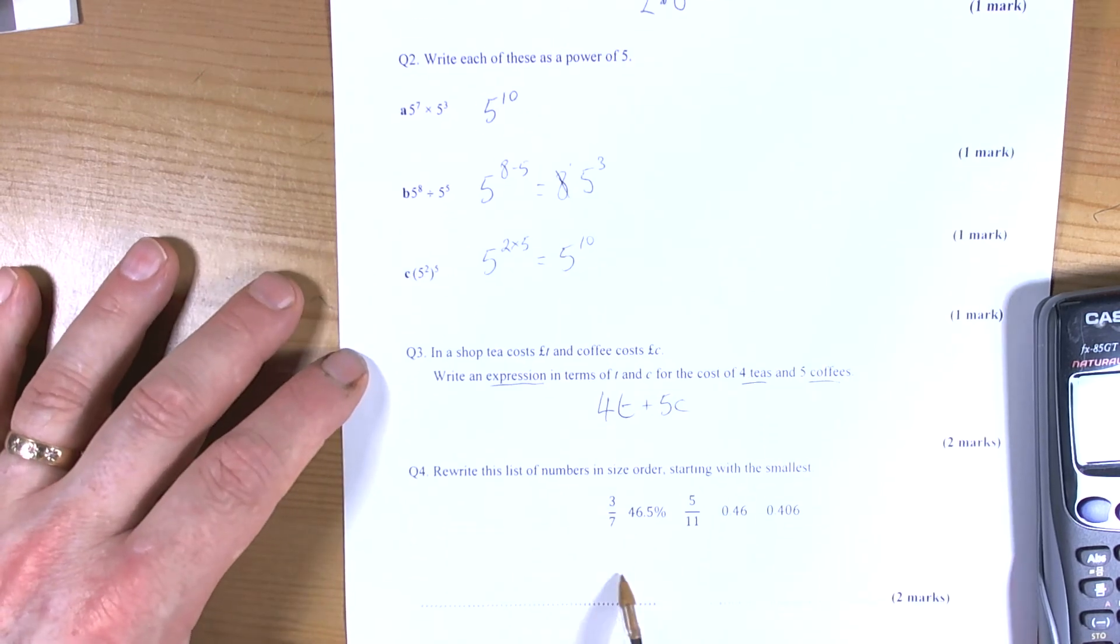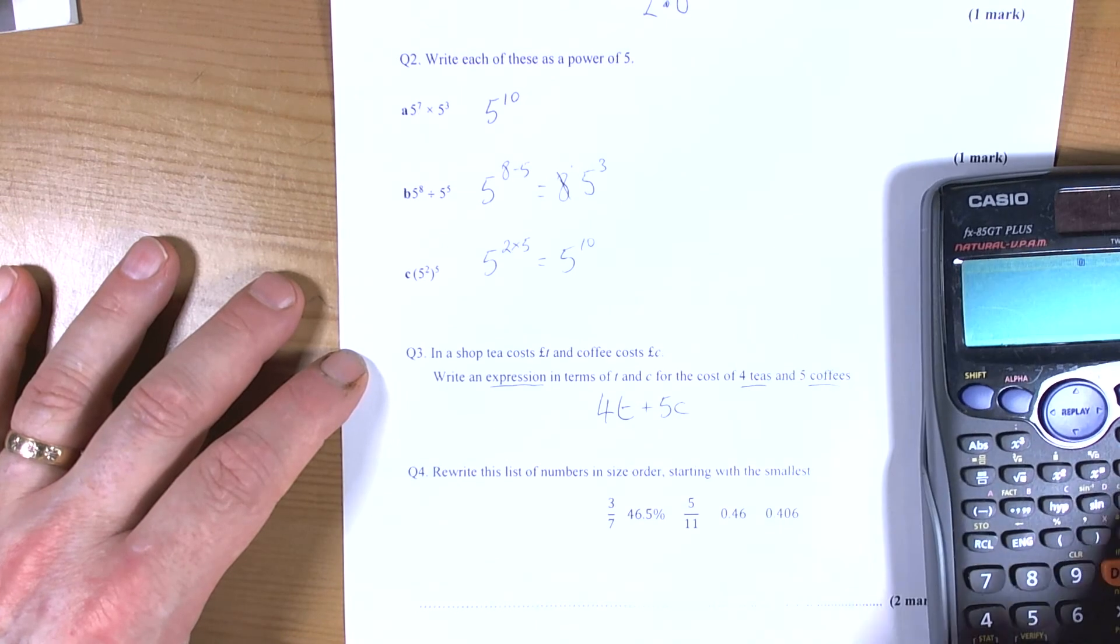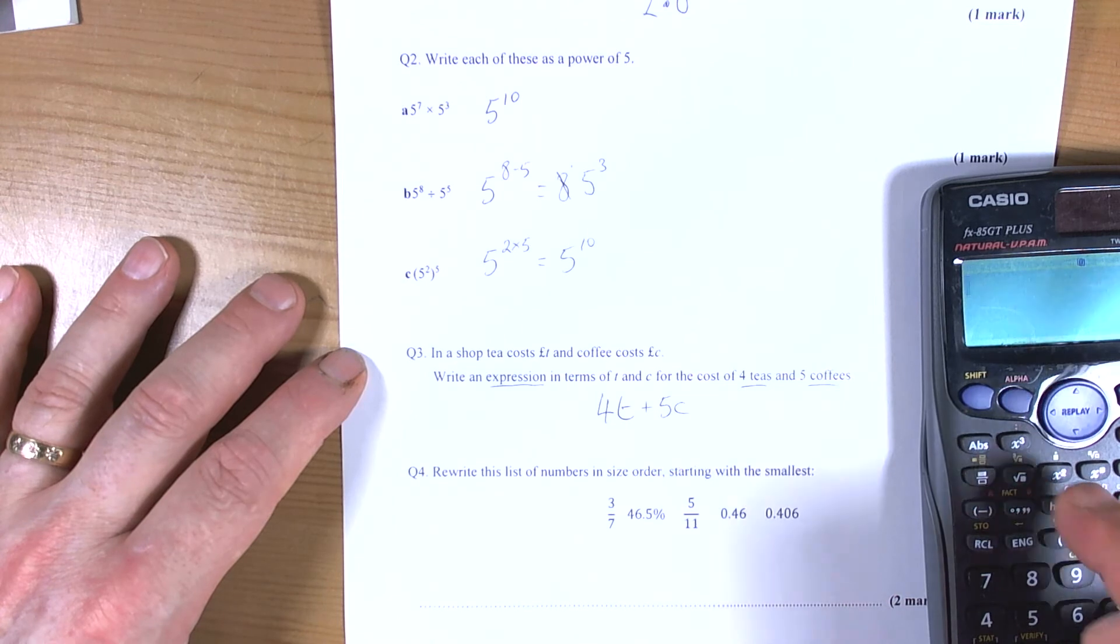These kind of comparison questions, it's a calculator paper. So turn everything into like by like. Easy to compare decimals. So turn our fractions.